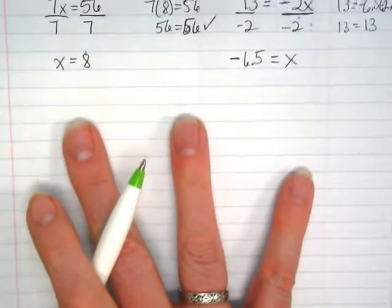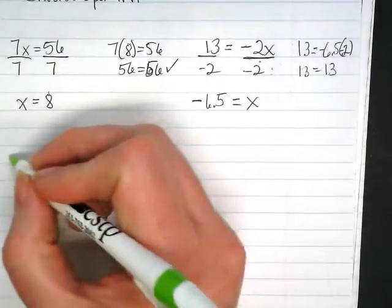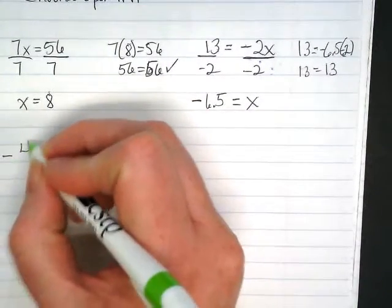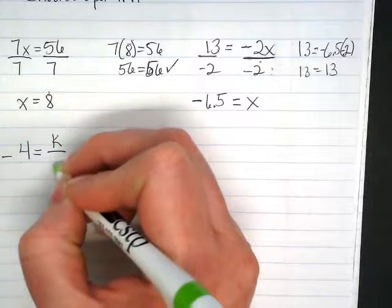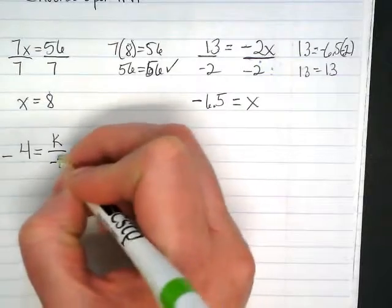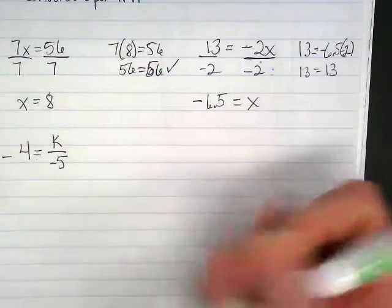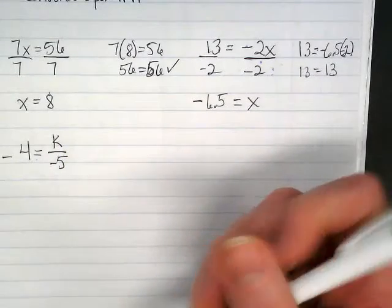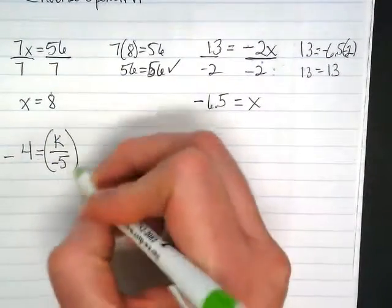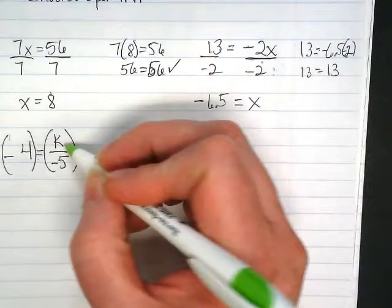Those should be pretty familiar to you guys from 7th and 8th grade math. What we're looking at now is the one that I find tends to confuse people more, when I have something that has a variable over a number. Negative 4 is equal to k divided by negative 5. Well, what I have here, this is a division problem, and the inverse of division is multiplication.